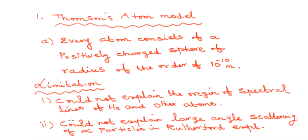The first one is Thomson's atom model. In Thomson's atom model, the first point is: every atom consists of a positively charged sphere of radius of the order of 10⁻¹⁰ meter. They may ask what is the order of the radius of Thomson's atom model, so remember this value.